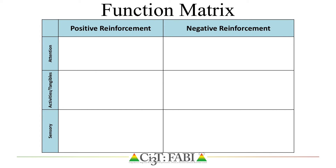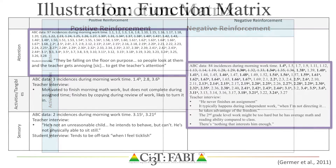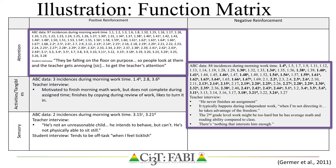The matrix includes two columns: positive reinforcement (access something) and negative reinforcement (avoiding something), with the rows indicating whether or not the behavior occurs to access or to avoid attention, tangibles, or activities, and/or sensory experiences.